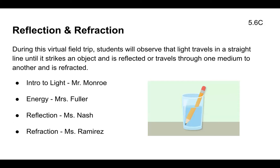During this virtual field trip, students will observe that light travels in a straight line until it strikes an object and is reflected, or travels through one medium to another and is refracted. We'll start with an introduction to light by Mr. Monroe, then explore how light energy exists in cycles, patterns, and systems with Mrs. Fuller, then explore reflection with Ms. Nash, and refraction with Mr. Ramirez.